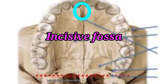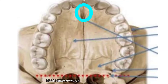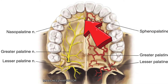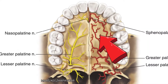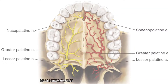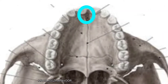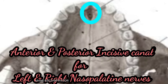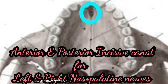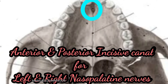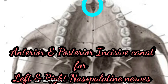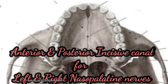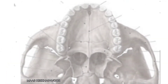The incisive canals are openings in the floor of the incisive fossa. Through these, the nasopalatine nerve descends and the greater palatine nerve and blood vessels ascend. Sometimes the anterior part of the incisive fossa may show an anterior incisive canal and transmits the left nasopalatine nerve. The posterior part of the incisive fossa may show a posterior incisive canal and transmits the right nasopalatine nerve.